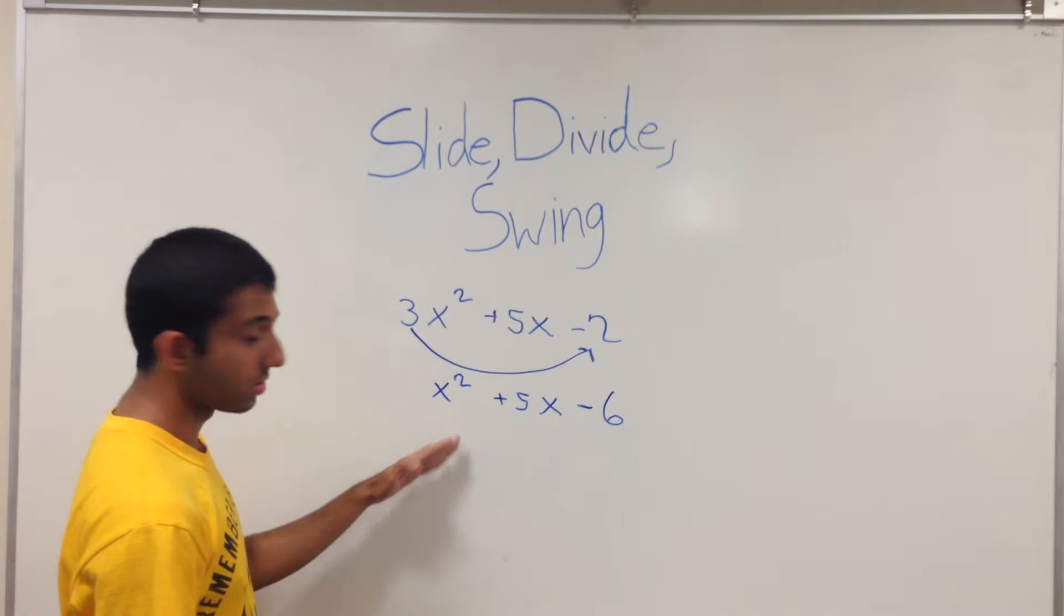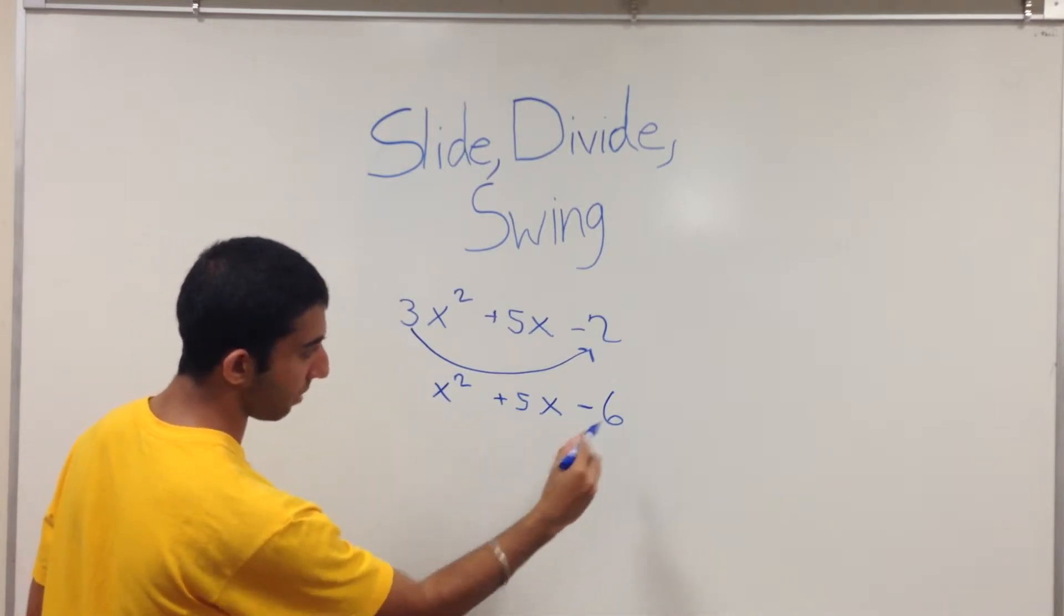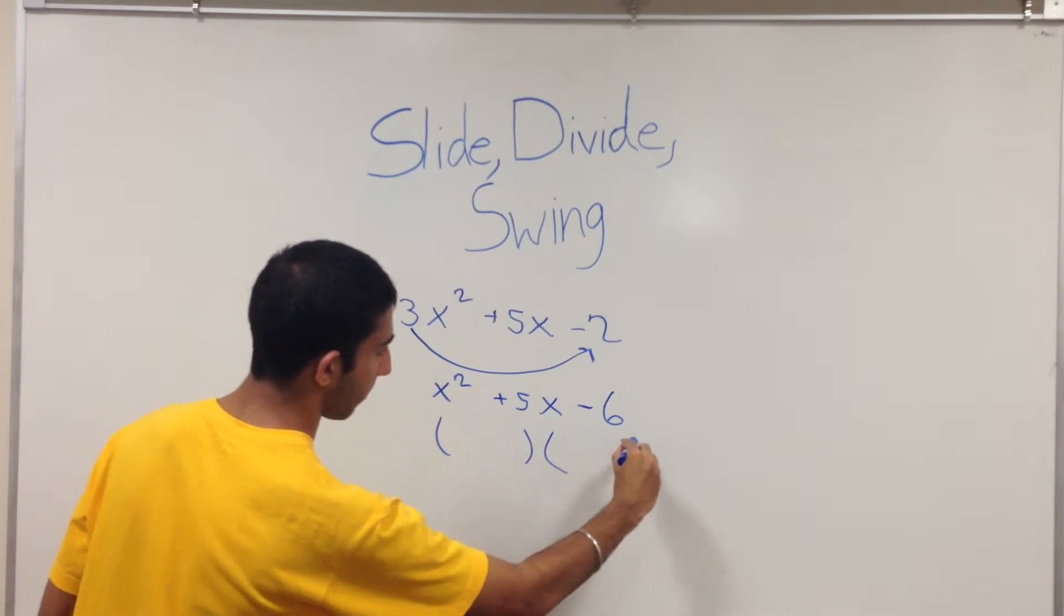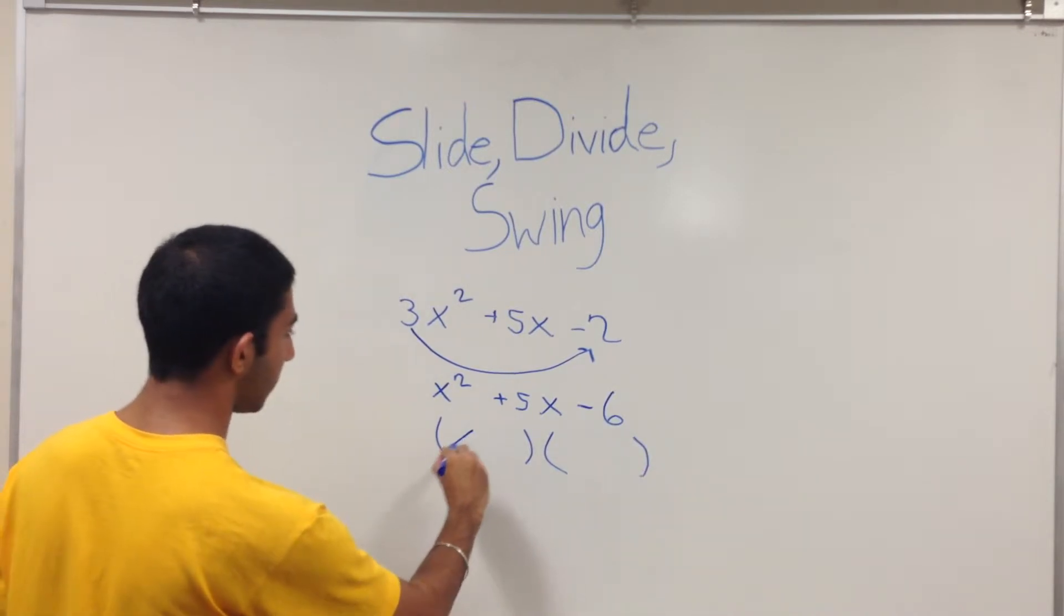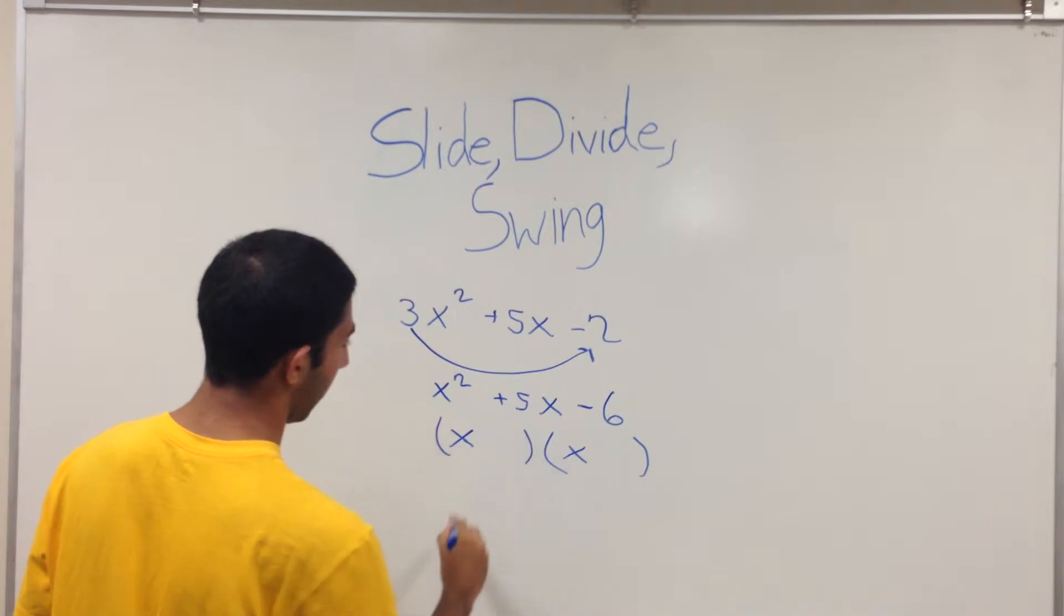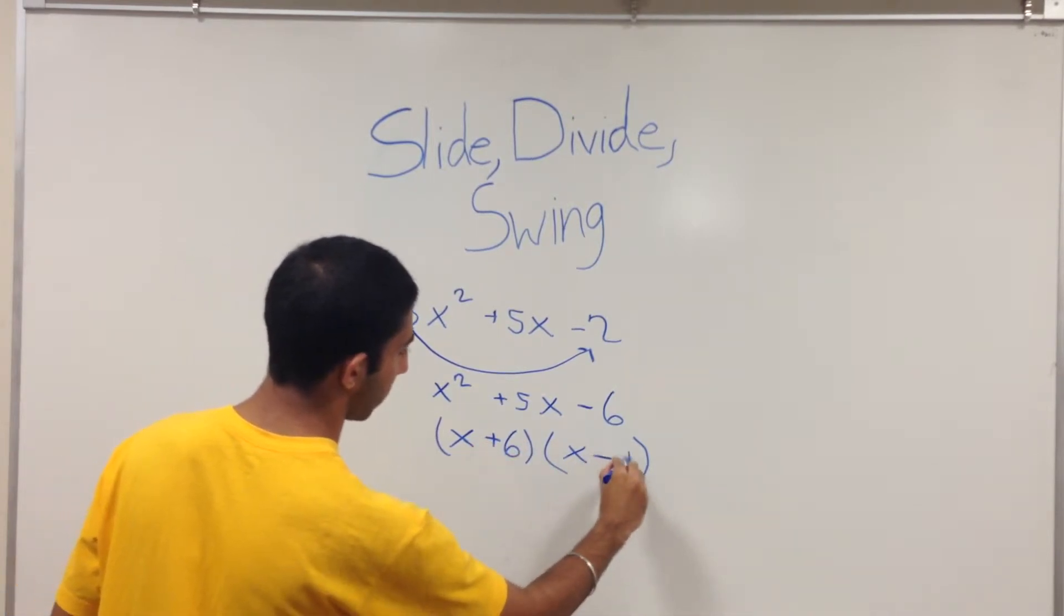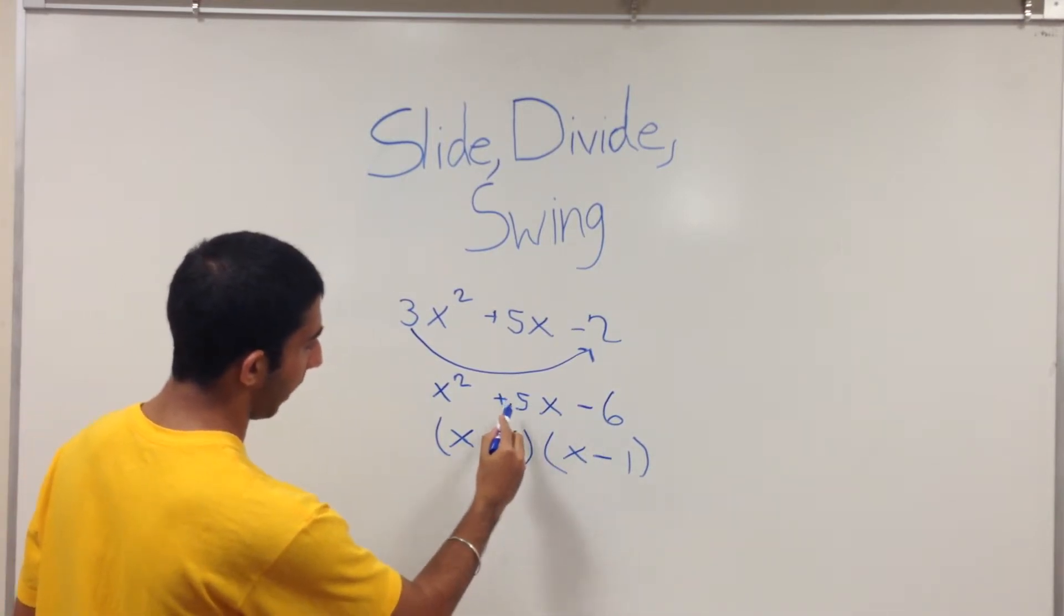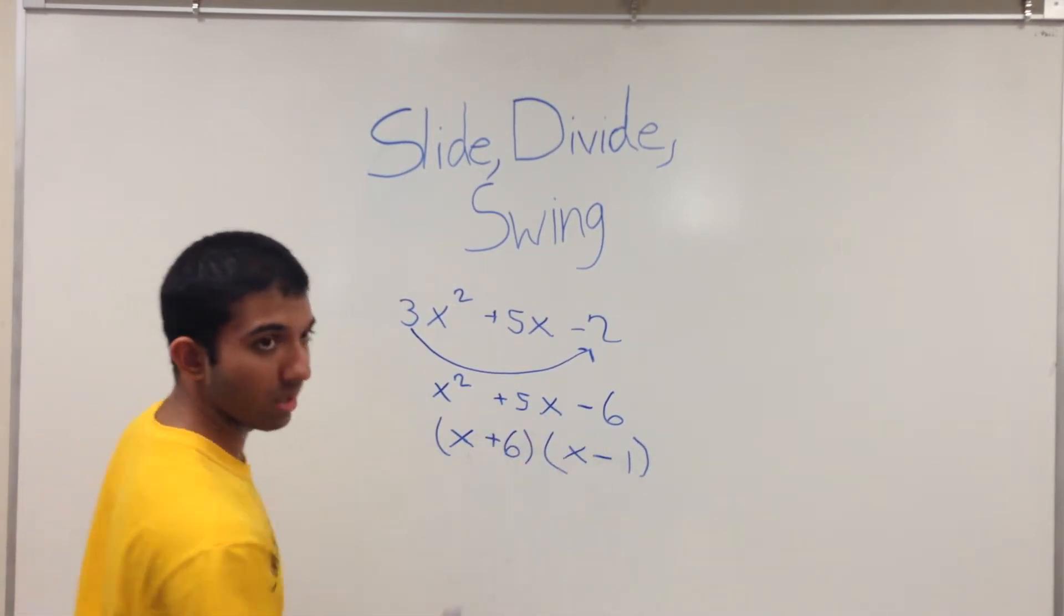Now you can easily factor this. x squared plus 5x minus 6 factors out to x, x, and you will have positive 6 minus 1. Positive 6 and minus 1, they add up to 5, and they multiply to negative 6.